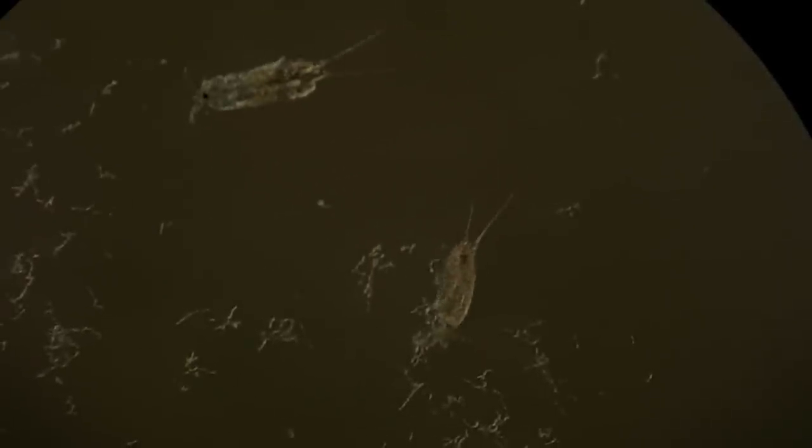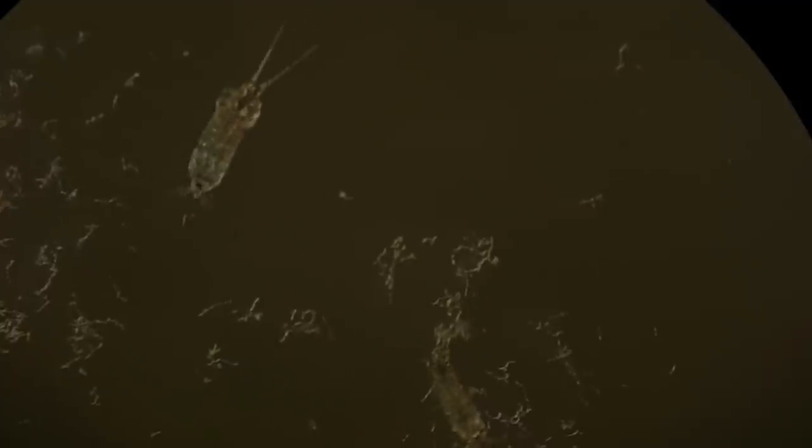What I think is really crazy is that these copepods and the paramecium are clearly in the same order of magnitude. But the paramecium only consists of one cell, while the copepod is made up of many cells. Which neatly shows the size difference cells can have.